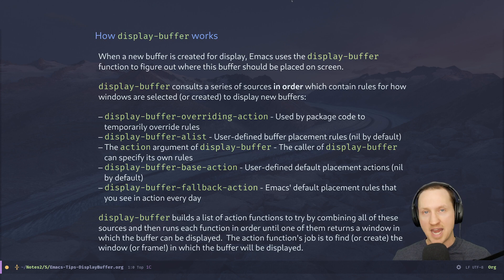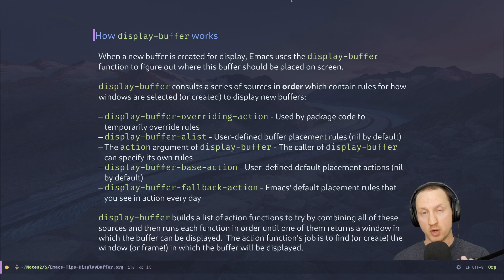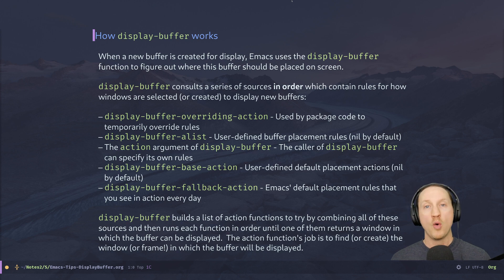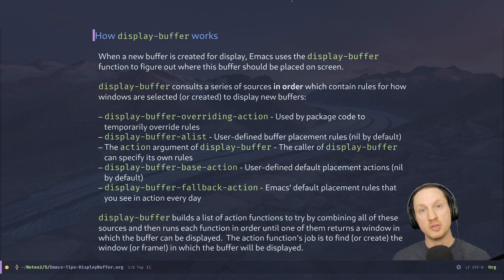What you need to understand in Emacs is how the display-buffer function works, because this is the core function that gets used whenever Emacs wants to display a new buffer. Whether you open a file or a package needs to display a buffer — like a Magit status pane, a help buffer, or an Org Mode document — display-buffer is what ultimately gets called to decide where that buffer is going to be displayed.